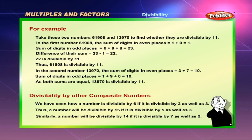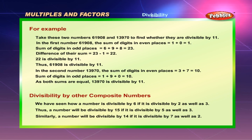Divisibility by other composite numbers: just as a number is divisible by 6 if it is divisible by both 2 and 3, a number is divisible by 15 if it is divisible by both 5 and 3. Similarly, a number is divisible by 14 if it is divisible by both 7 and 2.